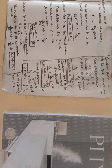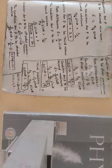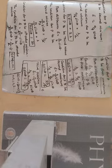The zeroth order maximum is the central maximum. The points of maximum intensity lie nearly midway between the successive minima.